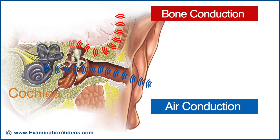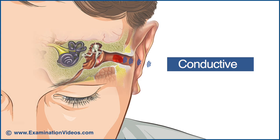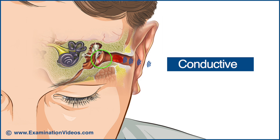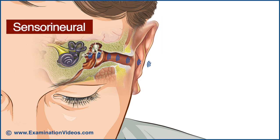Regardless of which pathway brings the sound to the cochlea, it is received here and then transmitted to the brain via the auditory nerve. Conductive hearing loss is caused by a blockage of sound transmission through the outer and middle ear — for example, accumulation of earwax or a perforated eardrum limiting air conduction. Sensorineural hearing loss, on the other hand, is caused by problems with the cochlea of the inner ear or neural pathways to the brain.